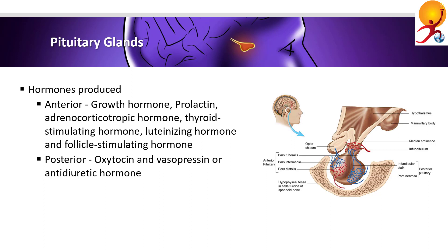Oxytocin is secreted in women during delivery to increase the strength and frequency of uterine contractions and to help the baby's birth. During the lactation period, the infant's sucking action on the mother's nipple stimulates the production of oxytocin, which then increases secretion of milk by mammary glands.